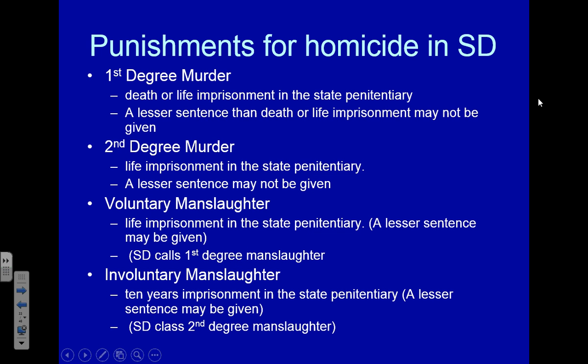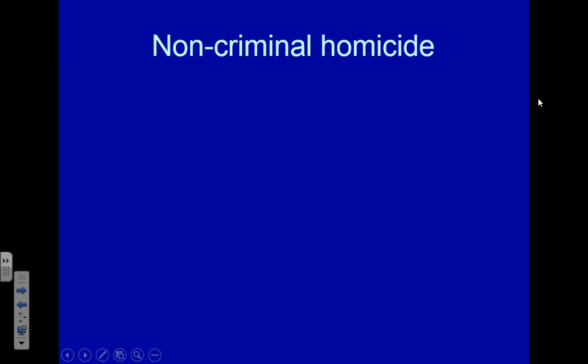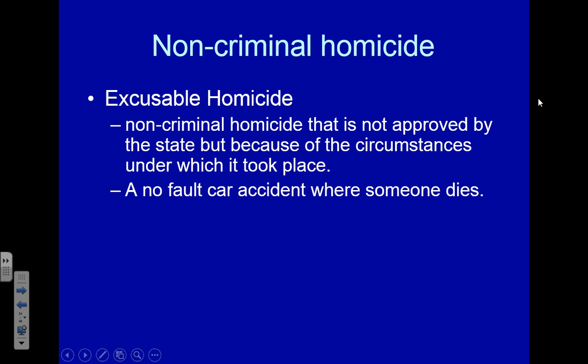You can't just use the term homicide, because not all homicides are criminal homicides. We have some non-criminal homicides. Excusable homicide is a non-criminal homicide not approved by the state in advance, but it's also not a crime. Let's say I'm driving my car, following the speed limit, not intoxicated, not doing anything wrong, but I hit an icy patch in the road, my car rolls over, and my passenger dies. I wasn't doing anything wrong — it's not a crime — but it's still a homicide. That's an excusable homicide, basically an unfortunate accident.